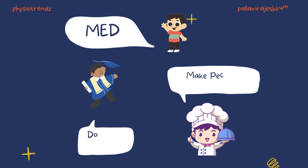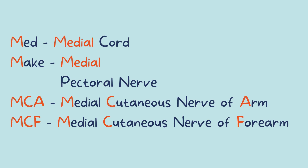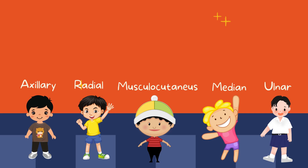Med — medial pectoral nerve. Med — do MCA, MCF. Med is for medial cord: M for medial, C for cutaneous, A for arm, F for forearm.